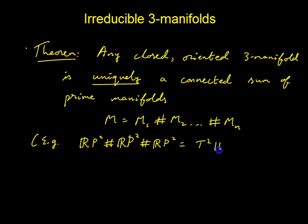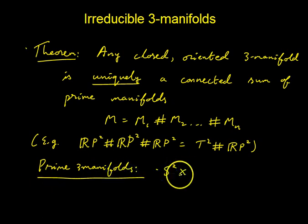This is rather special to three-manifolds—in some sense it's not even true for surfaces, at least if you allow non-orientable ones, because RP^2 connected sum RP^2 connected sum RP^2 equals T^2 connected sum RP^2. So it's not true for surfaces, but it's quite remarkably true for three-manifolds that there's a unique decomposition. Prime three-manifolds are in two classes: one of them is S^2 cross S^1, and the rest are what are called irreducible.